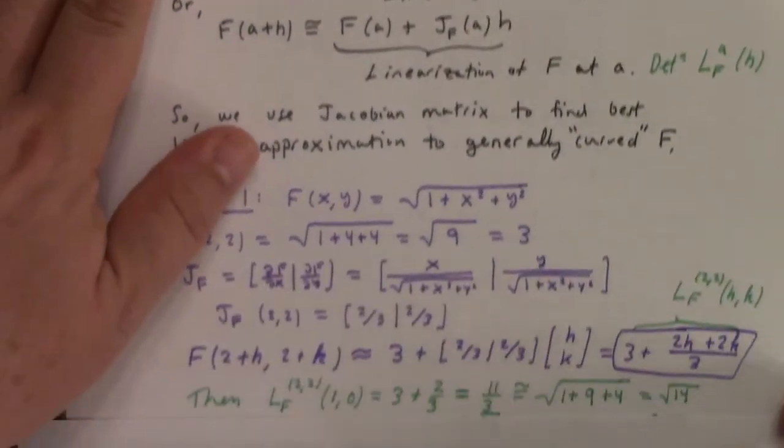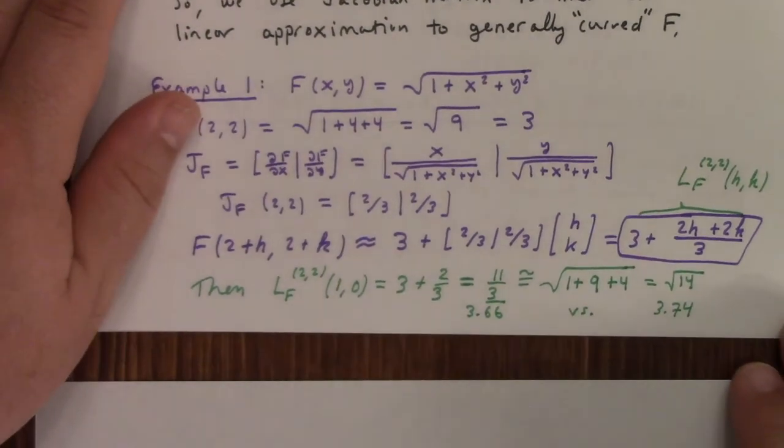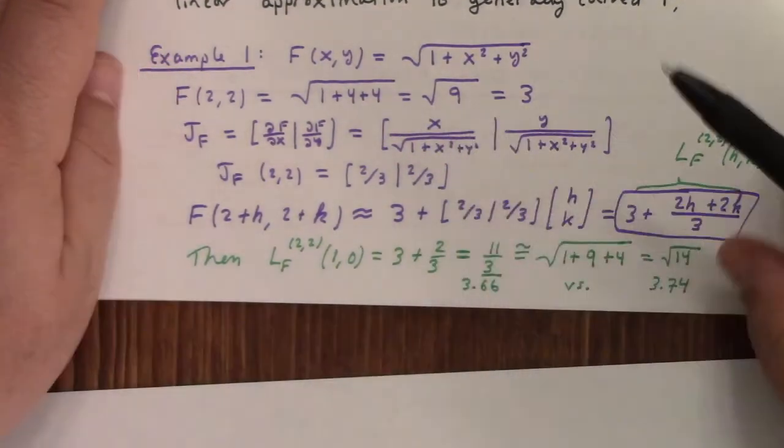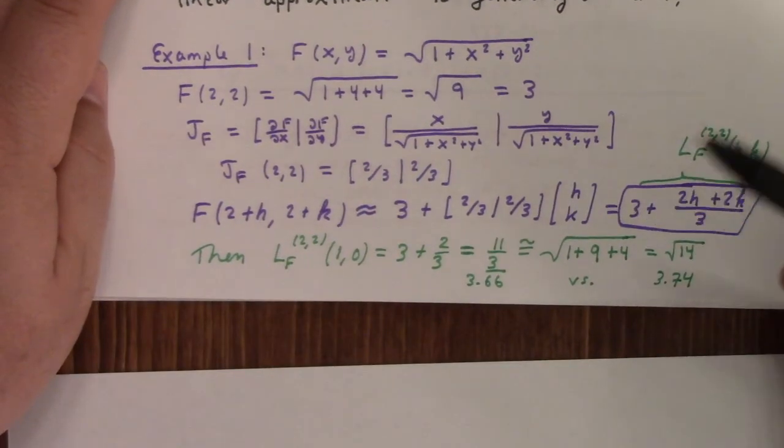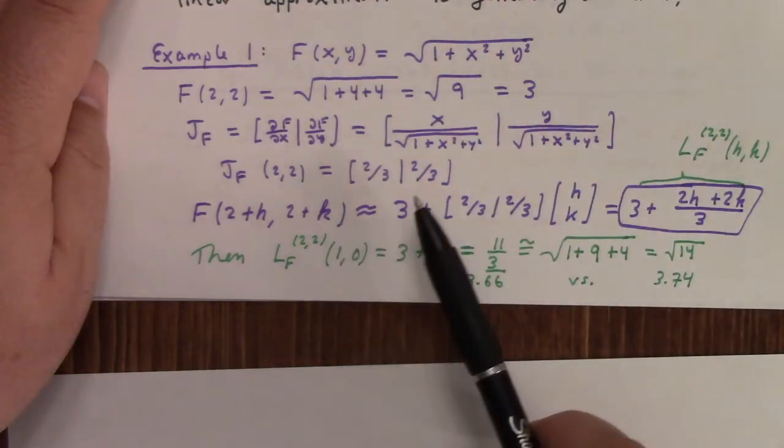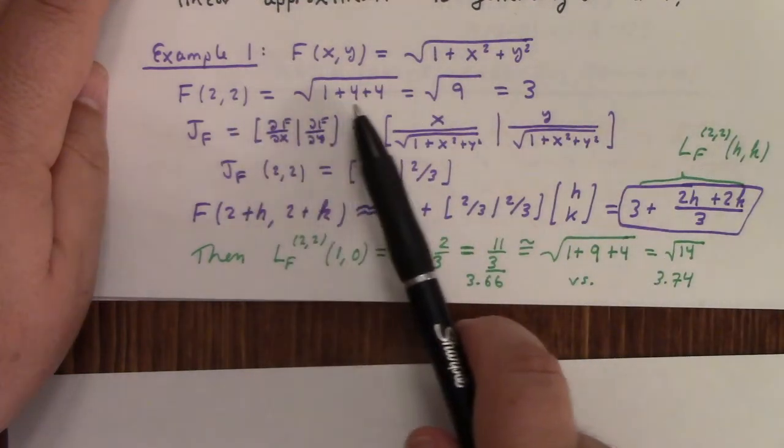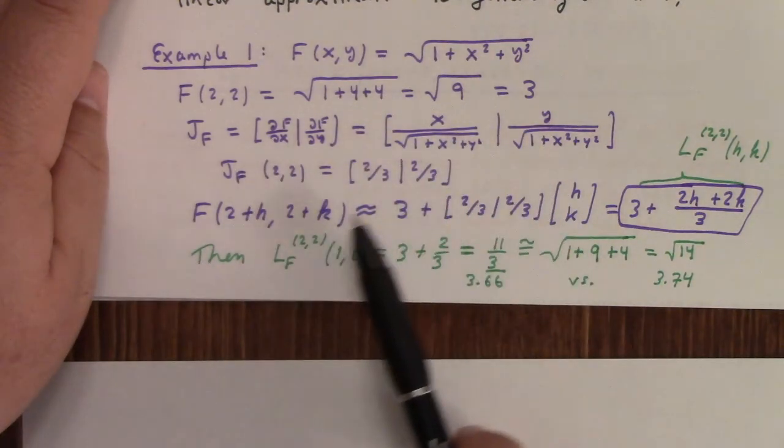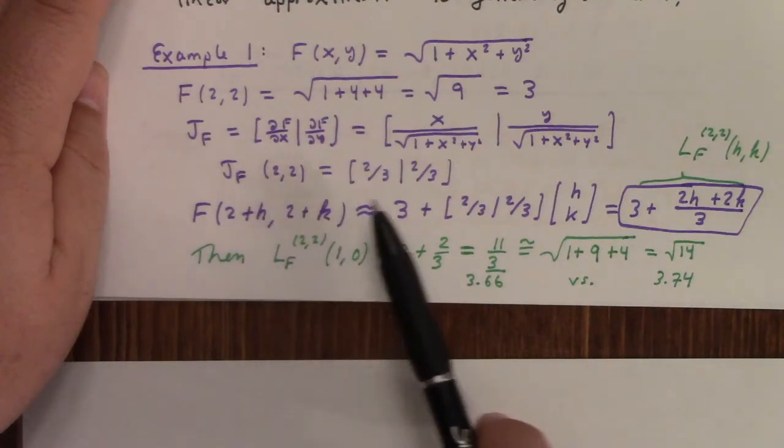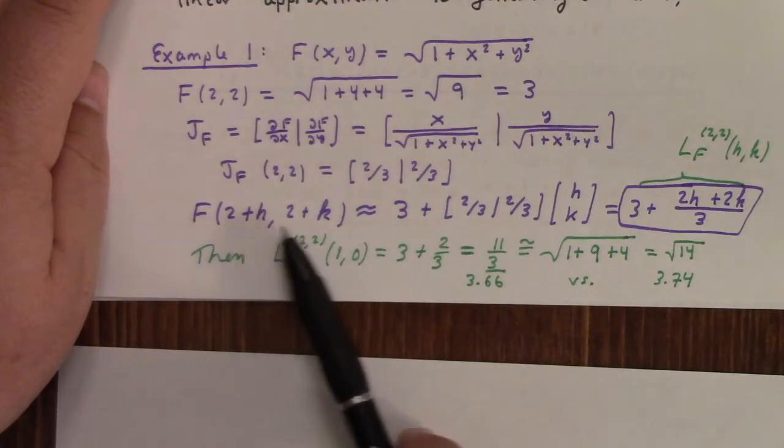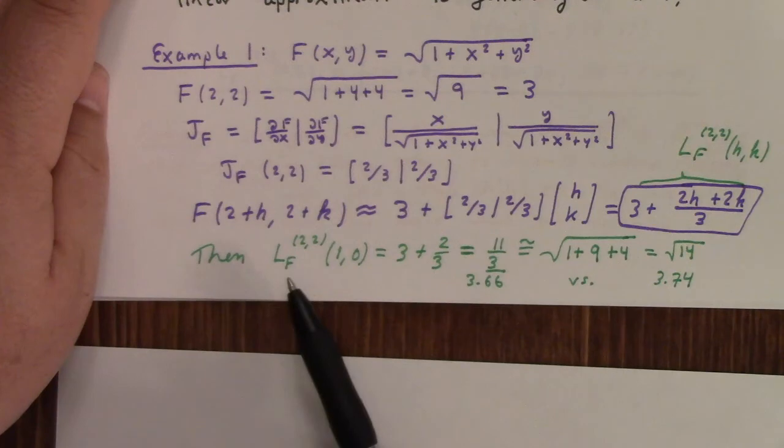So we use the Jacobian matrix to find the best linear approximation to the generally curved function. Here's an example. An actual example. What do you know? So I've got a function f(x,y) is equal to the square root of x times (1 + x^2 + y^2). And so f(2, 2) is 3. And the Jacobian of f is this, which means that my Jacobian is actually a row vector, 2/3, 2/3. And here it is. So this is a good approximation to the function near (2, 2).